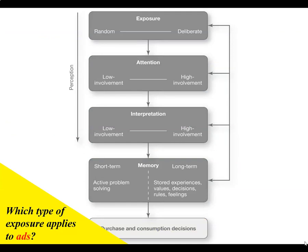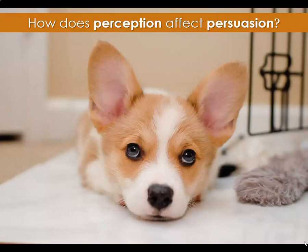What type of exposure applies specifically to ads? If you answered deliberate exposure, you would be right. So next we need to ask ourselves: how does perception affect persuasion? Marketers have to determine how consumers acquire information and how much they are able to use that information effectively, and if they want their messages to persuade consumers.